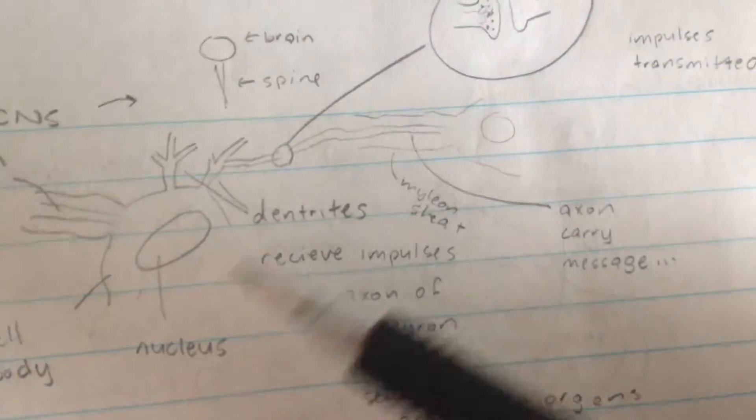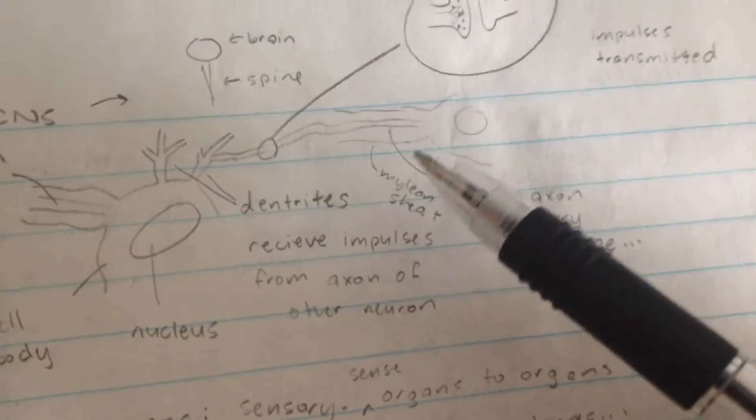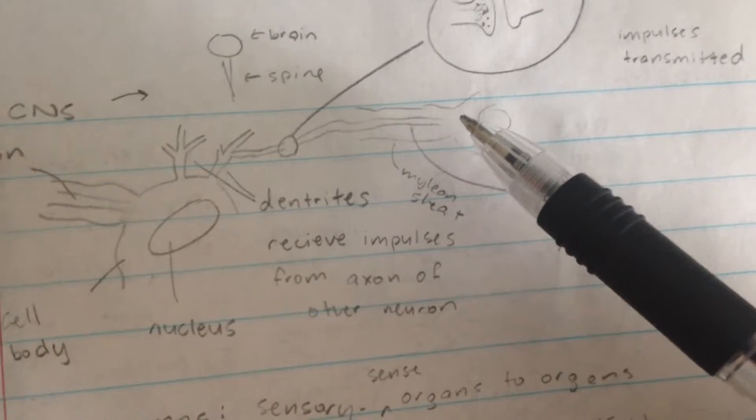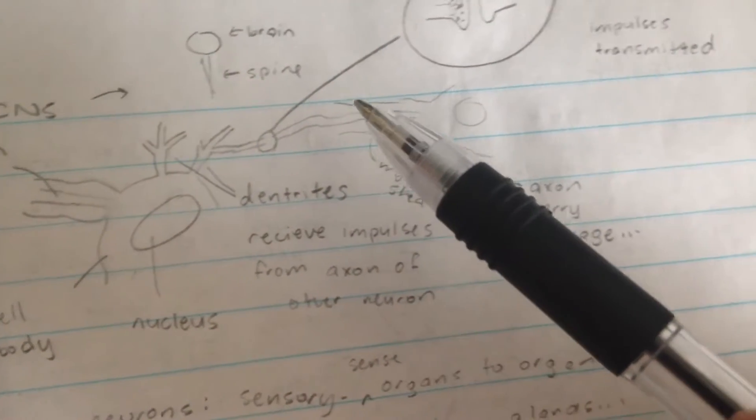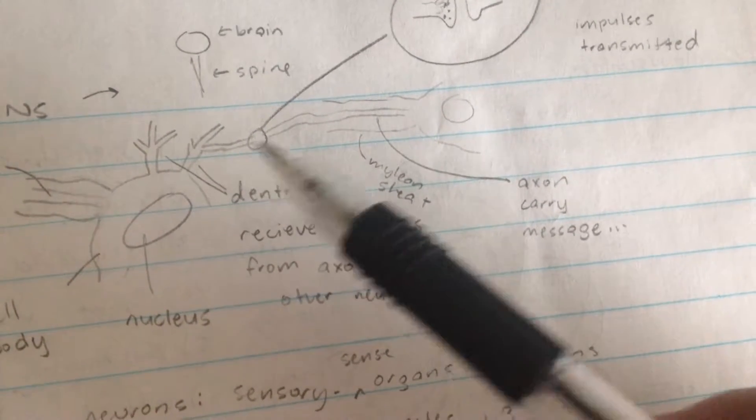So we have two neurons here, and let's say that this neuron wants to send a message to this neuron. This neuron uses the axon to send a message to this one, and this one uses the dendrites to receive those messages.